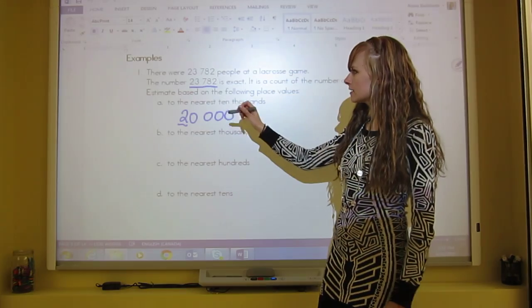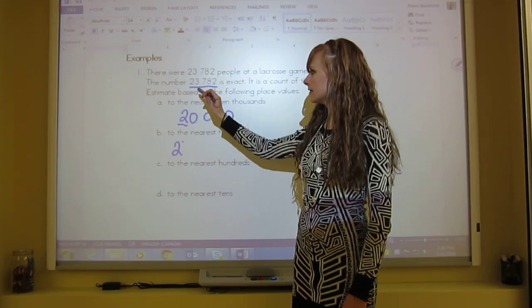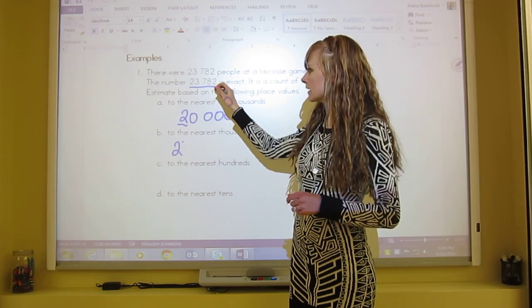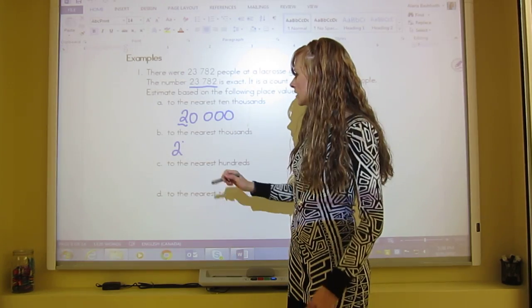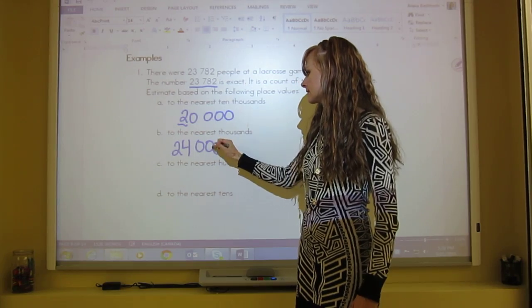And you should be done this now. So to the nearest thousand would be that three right here. So two stays the same. And then we don't know if the three will be a three or the benchmark of four. So we look right next door, seven is five or more. So it will bump up to a four. And zeros for the rest. So 24,000.